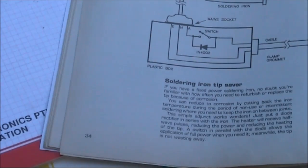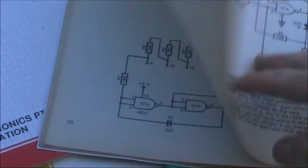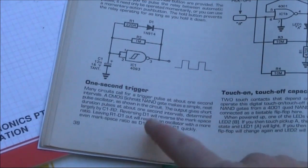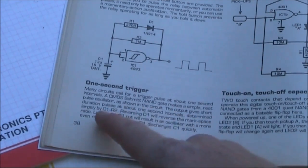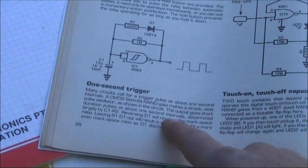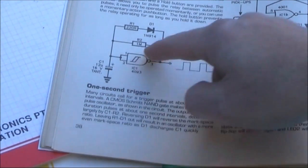Sometimes ideas jump out at you when you're browsing the web or a book. Here is an old ETI cookbook from about the 1980s. The circuit here is a one second trigger, a square wave oscillator. The output gives short duration pulses at about one second intervals, determined largely by C1 and R2.